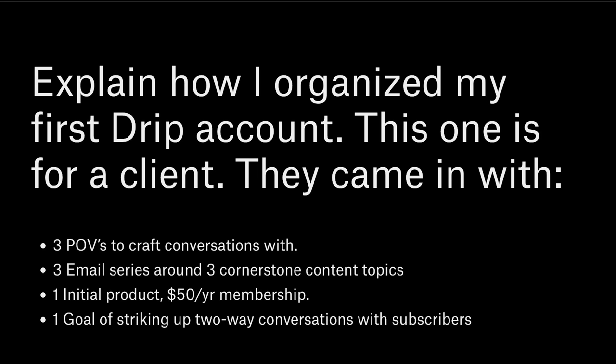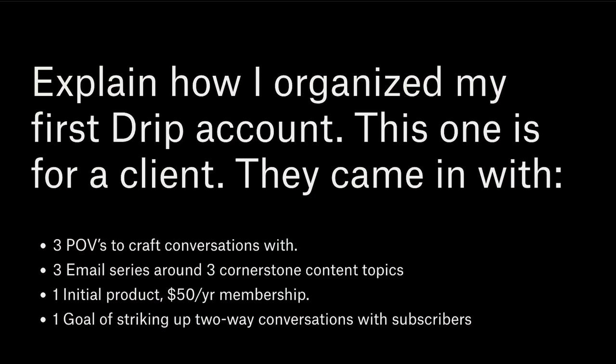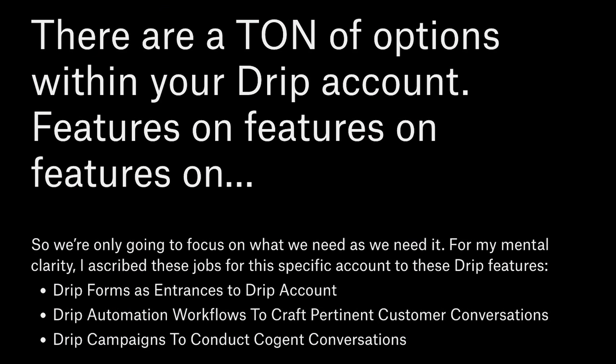I organized the account for my client, and they came in with some constraints we have to take into account. They have three points of view they're focusing on — we're going to craft conversations with those. They also have three email series around three cornerstone content topics for the website. They have an initial product of a $50 per year membership, and one goal of striking up two-way conversations with subscribers. There are a ton of features in Drip, so we're only going to focus on the ones we absolutely need to get started. For my mental clarity, I assigned these specific jobs to these Drip features.